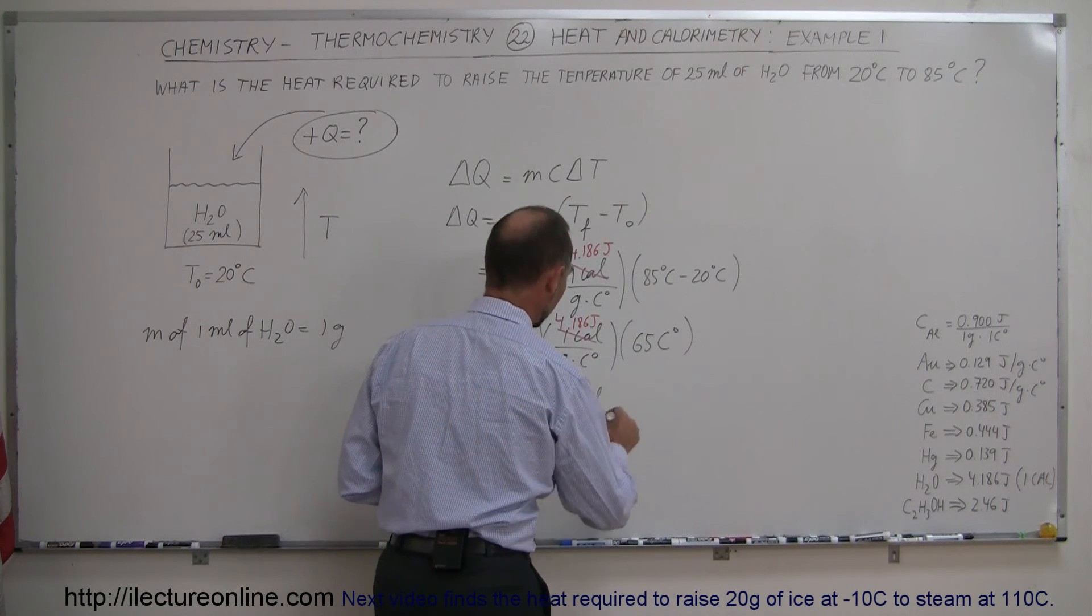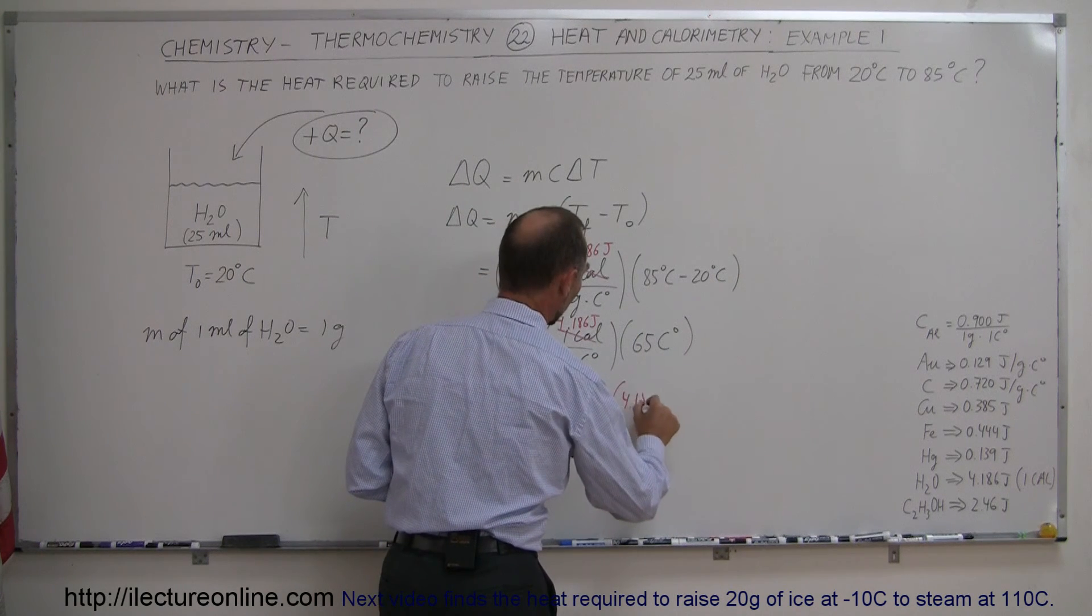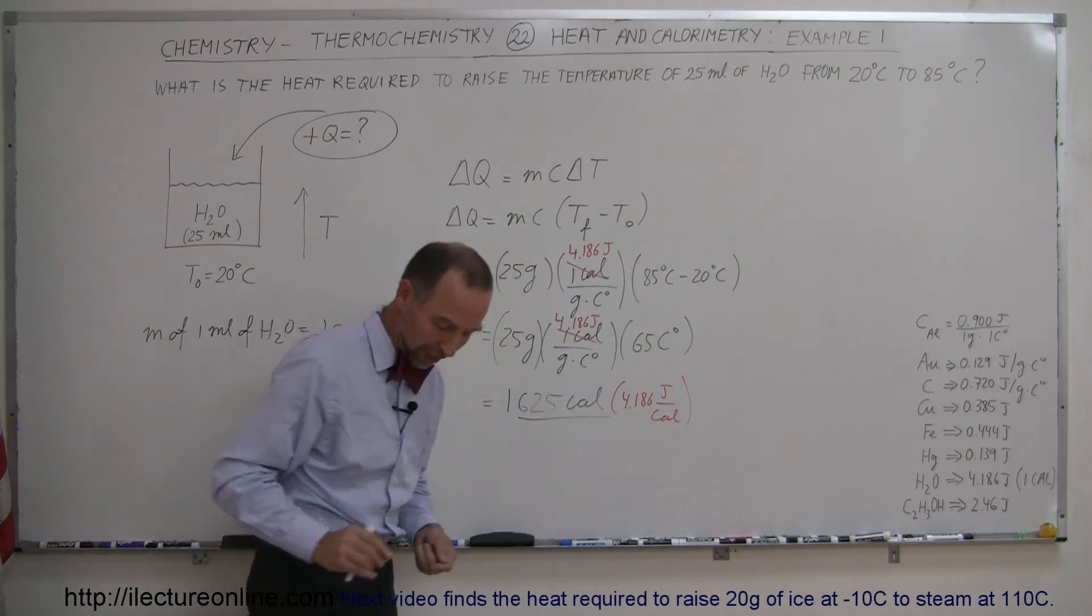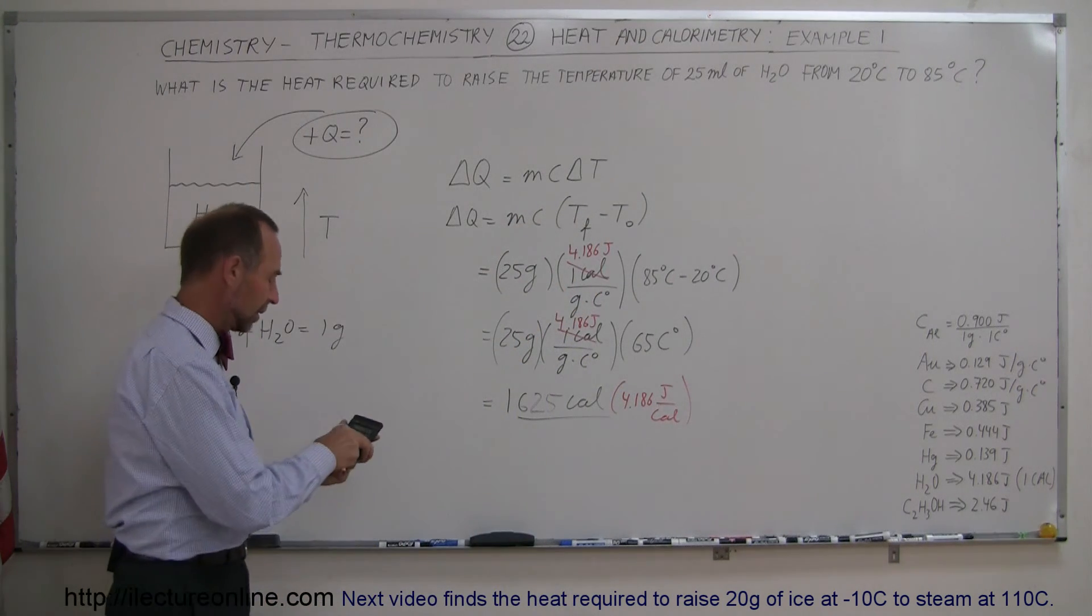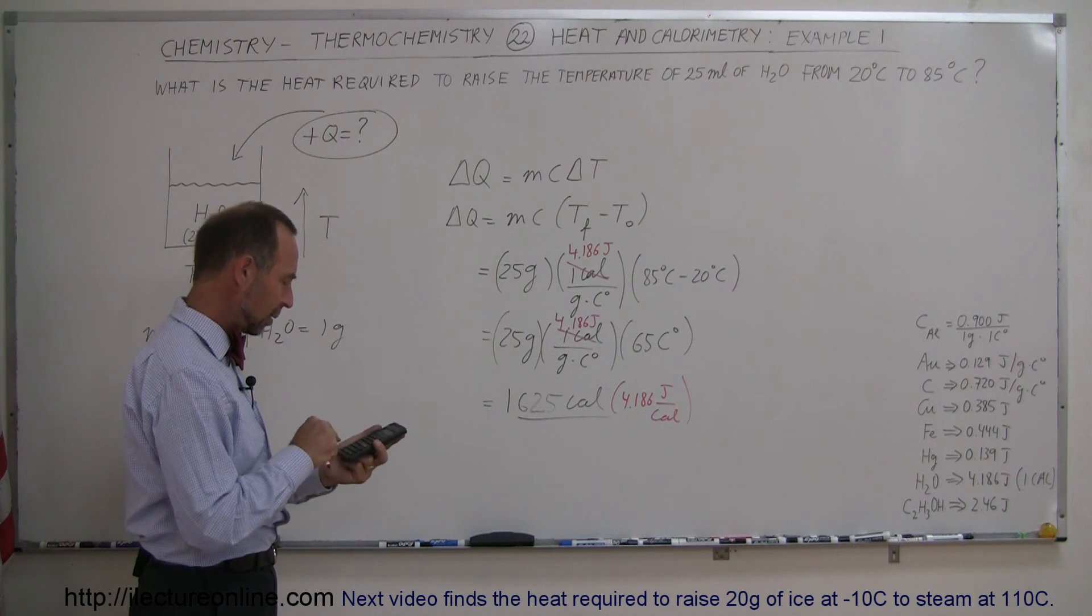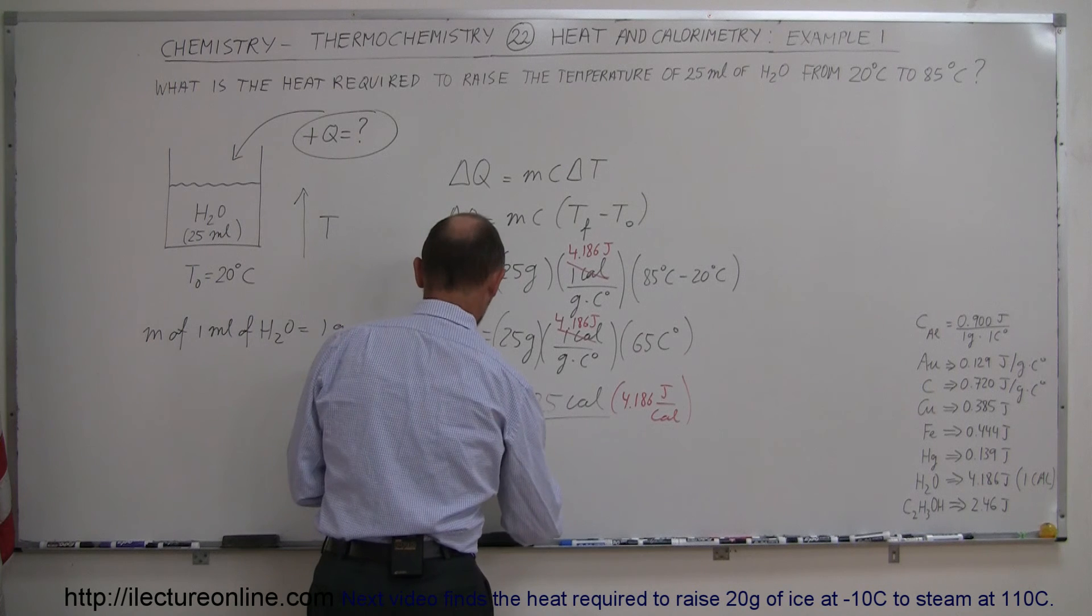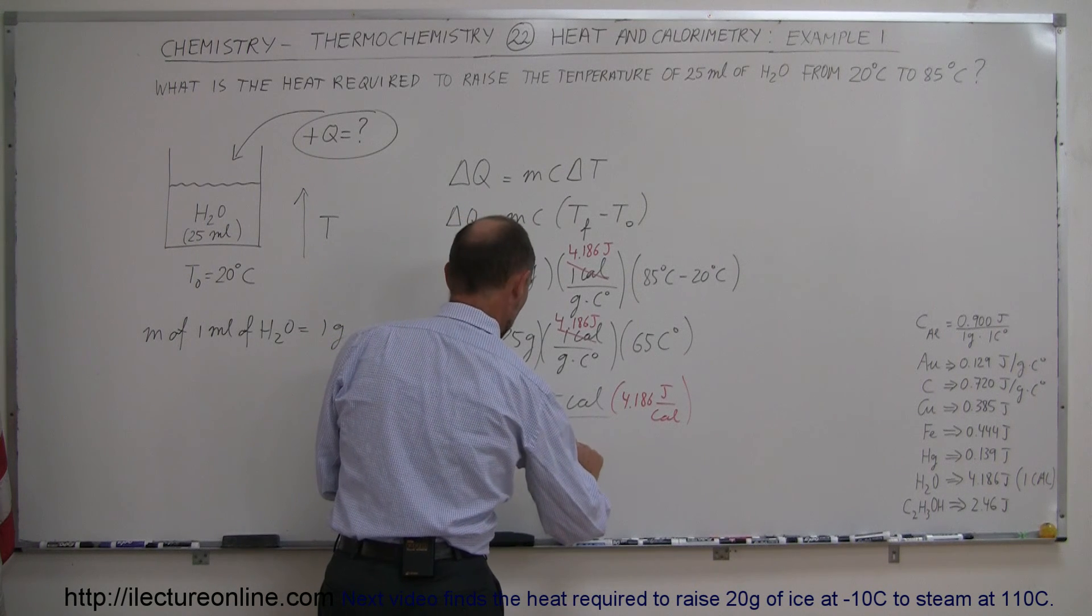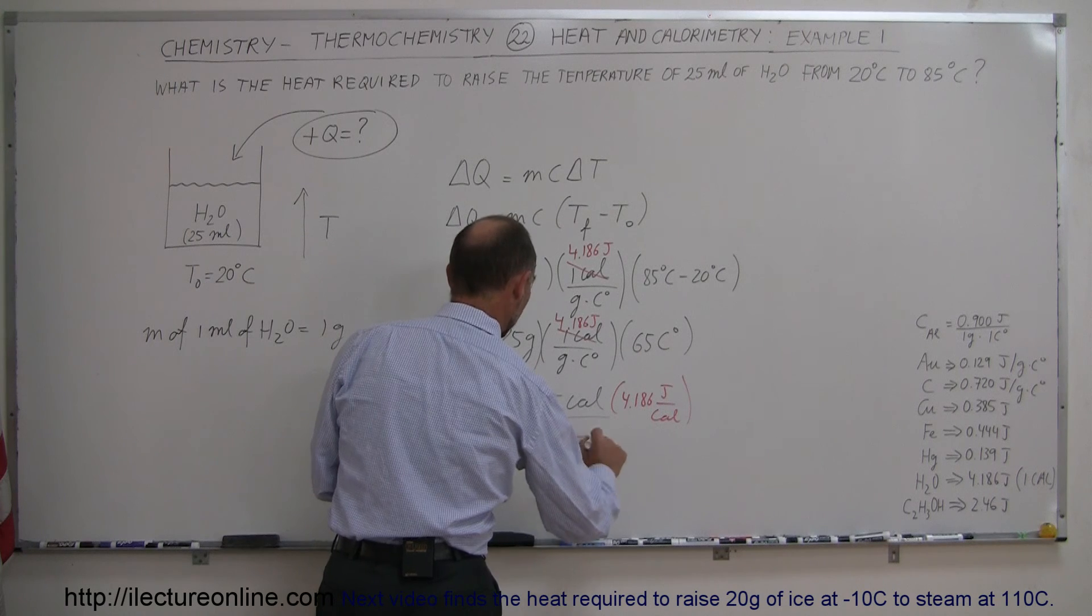And this would have been this number times, of course, 4.186 joules per calorie. It would have been this conversion factor. So we take that number times 4.186 equals, and then we would have had a result of 6,802 joules instead of calories.